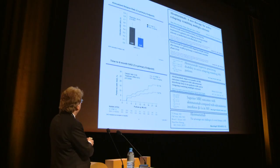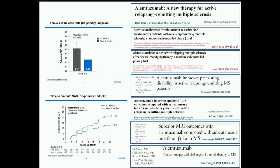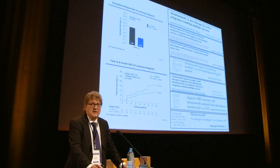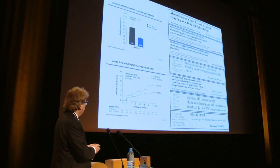Alemtuzumab results were impressive, with significant reduction in relapse rates against highly active platform therapy, and the co-primary endpoint of sustained accumulation of disability was achieved in at least one trial. Notably, two annual courses provide sustained benefits: even seven years after cessation of alemtuzumab, clinical stabilization in a large fraction of patients appears to be maintained.